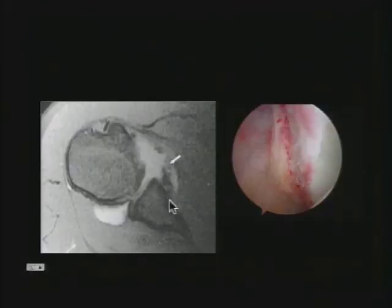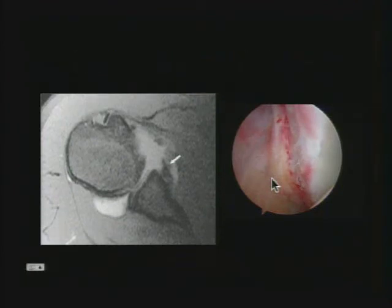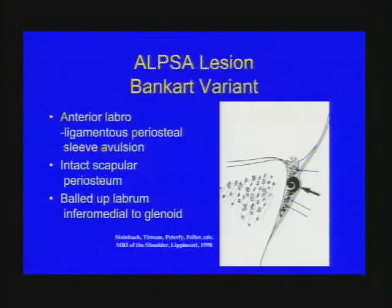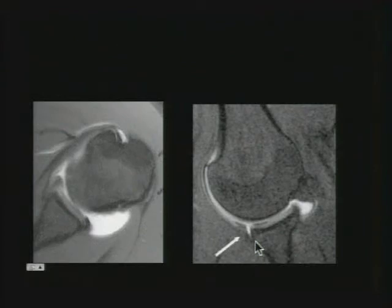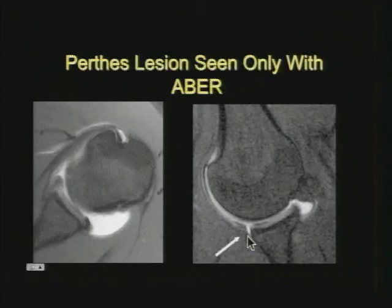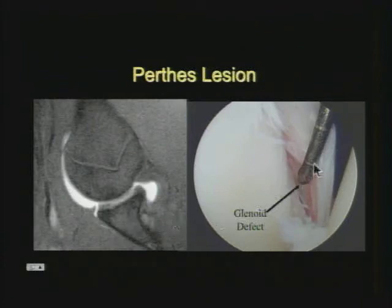There are variants of the Bankart lesion. The ALPSA lesion is when the labrum is still attached to the periosteum and balled up medially. The third variation, the Perthes lesion, is when the labrum anteroinferiorly is still attached to scapular periosteum but not balled up — sometimes hard to see, but abduction-external rotation will bring it out. Each variant differs by its relationship to the periosteal attachment and location.